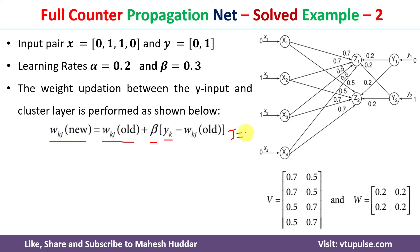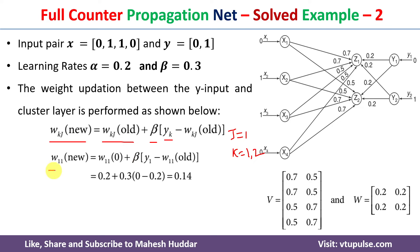With j=1, k goes from 1 to 2. Putting j=1 and k=1: w11(new) = w11(old) + beta * (y1 minus w11(old)). Here w11(old) = 0.2, beta = 0.30, and y1 = 0. Solving this equation gives w11(new) = 0.14.